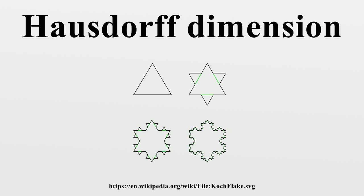The Hausdorff dimension measures the local size of a space, taking into account the distance between points. Consider the number N of balls of radius at most R required to cover X completely. When R is very small, N grows polynomially with 1/R. For a sufficiently well-behaved X, the Hausdorff dimension is the unique number D such that N grows as 1/R^D as R approaches 0. More precisely, this defines the box-counting dimension, which equals the Hausdorff dimension when the value D is a critical boundary between growth rates that are insufficient to cover the space and growth rates that are overabundant.